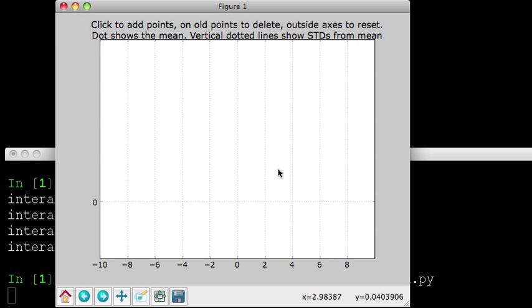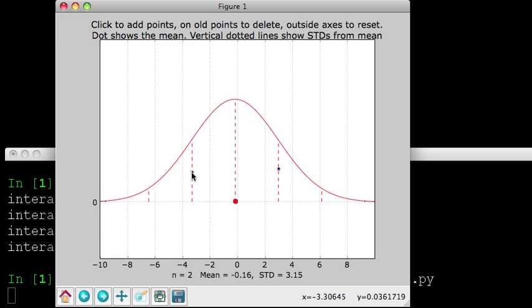A couple of intuitive things that you can see when you get to play with the data in this way: suppose we only have two points, then the mean is exactly halfway between them. And in fact, each point is exactly one standard deviation from the mean when you just have two.